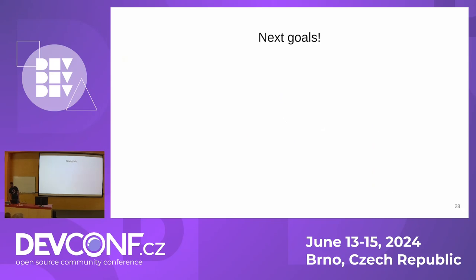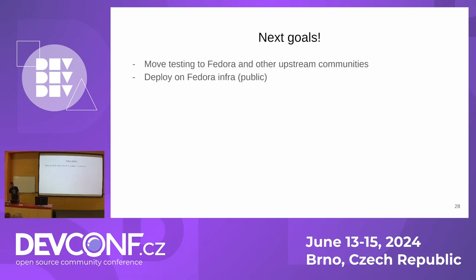What are our next goals now that the project is open source? We would like to move testing to Fedora and other upstream communities. Before that, we have to deploy publicly — we only had an internal deployment and never had a public deployment. So ideally we deploy in Fedora, make the deployment public, and before that, we need to scale.